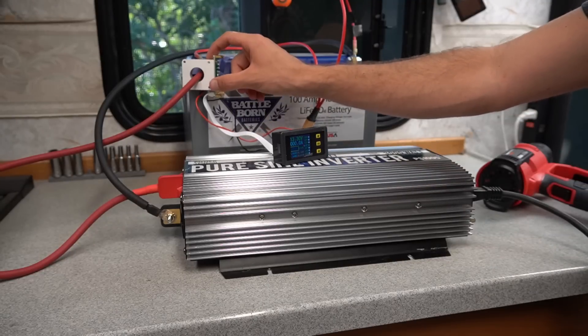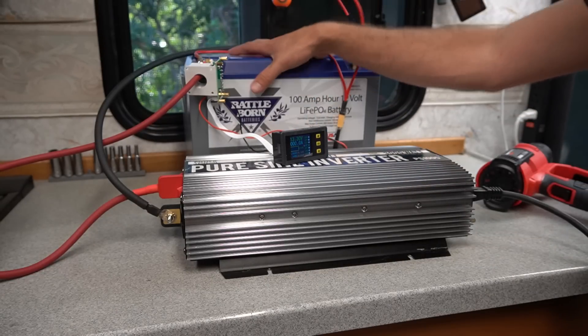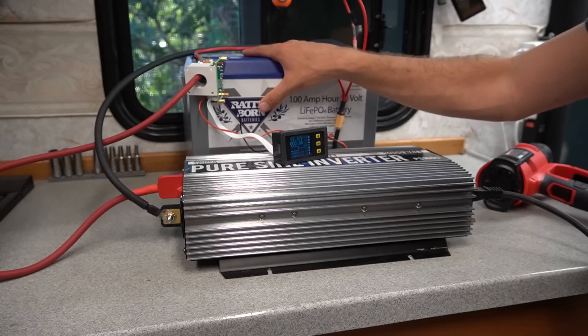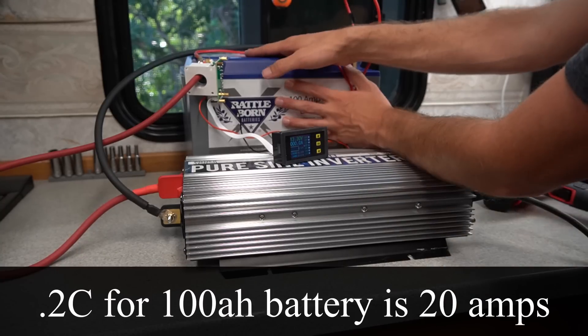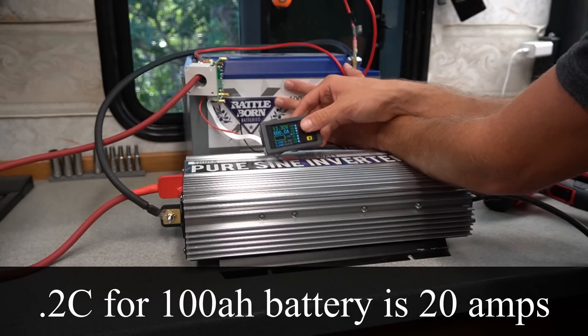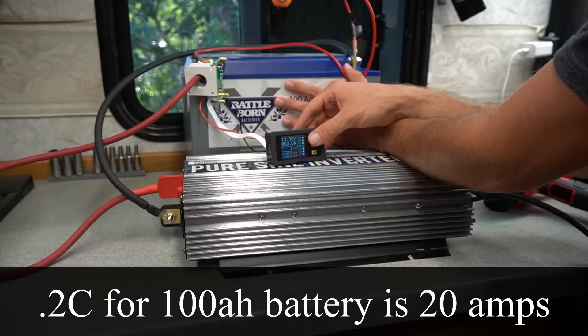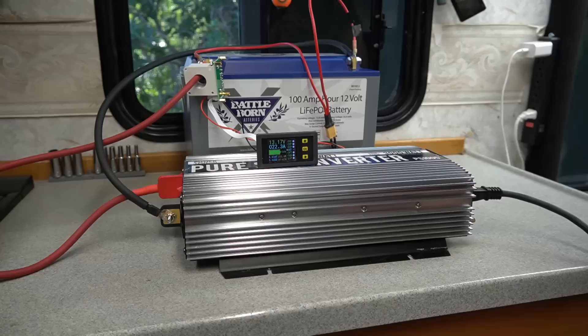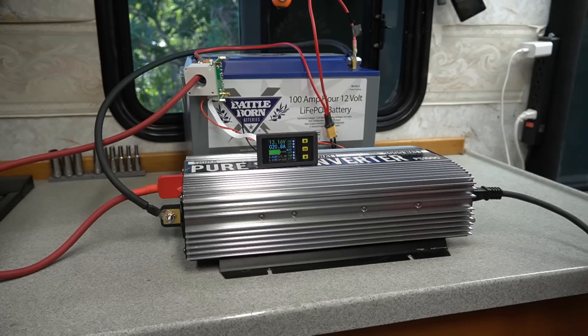So first on the test we have the Hall Effect Sensor practically at the terminal of a Battle Born and we're going to do 0.2C. So for 100 amp hour battery that means we need to jack this up to 20 amps and then see how long it can run for. 22 amps, that is good enough.